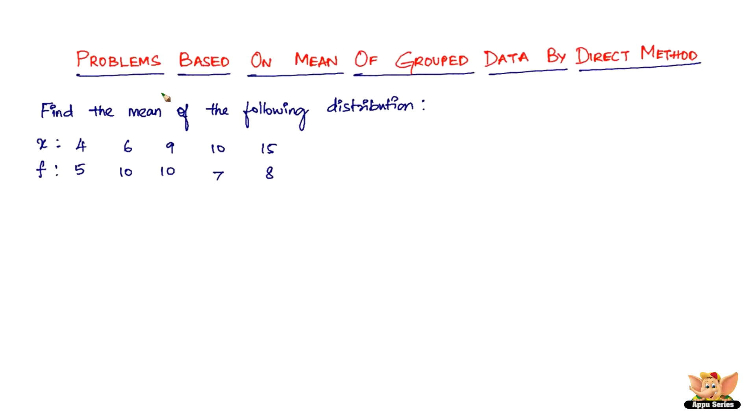In this video, we'll solve problems based on mean of grouped data by direct method. The question reads: find the mean of the following distribution. We have x values of 4, 6, 9, 10, and 15.